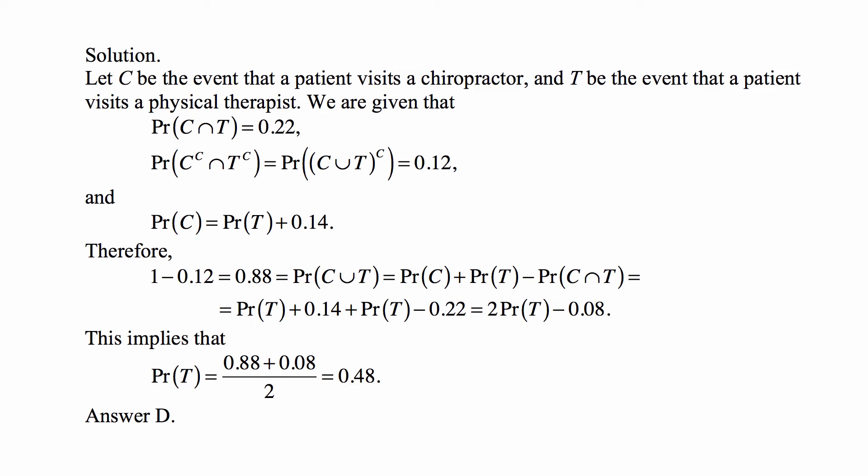That's the probability that a patient visits both of them. And the probability that the patient visits neither is the probability that the patient doesn't visit the chiropractor and doesn't visit the therapist. So it's the probability of the complement of C intersected with the complement of T, which is the same as the probability of the complement of the union.